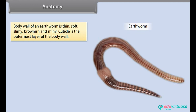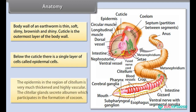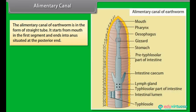The body wall of an earthworm is thin, soft, slimy, brownish and shiny. The cuticle is the outermost layer of the body wall. Below the cuticle there is a single layer of cells called epidermal cells. The epidermis in the region of clitellum is very much thickened and highly vascular. The clitellar glands secrete albumin which participates in the formation of the cocoon.